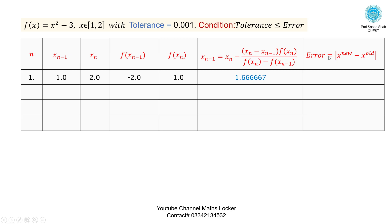Calculate the error: absolute value of x_new minus x_old. x_new = 1.66667, x_old = 1 (the first value of the interval). So 1.66667 - 1 = error 0.66667. Check this value: tolerance is 0.001, which is less than error 0.66667. This condition means we proceed to the next iteration.